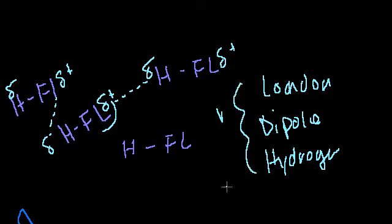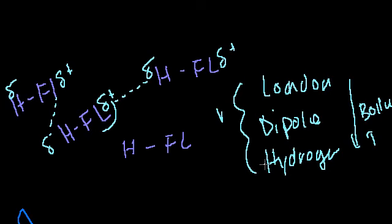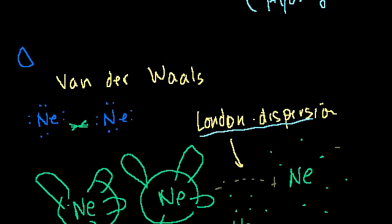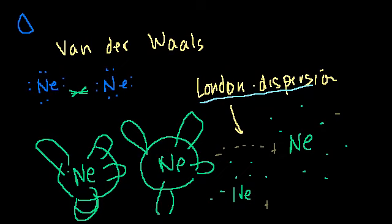All of these — London Dispersion, dipole-dipole, and hydrogen bonds — are Van der Waals forces. As the strength of the intermolecular bond gets stronger, the boiling point goes up, because it takes more and more energy to separate the molecules from each other. This has been a survey of the different types of intermolecular interactions that aren't covalent or ionic. In the next video, I'll talk about covalent and ionic types of structures and how they affect boiling points.